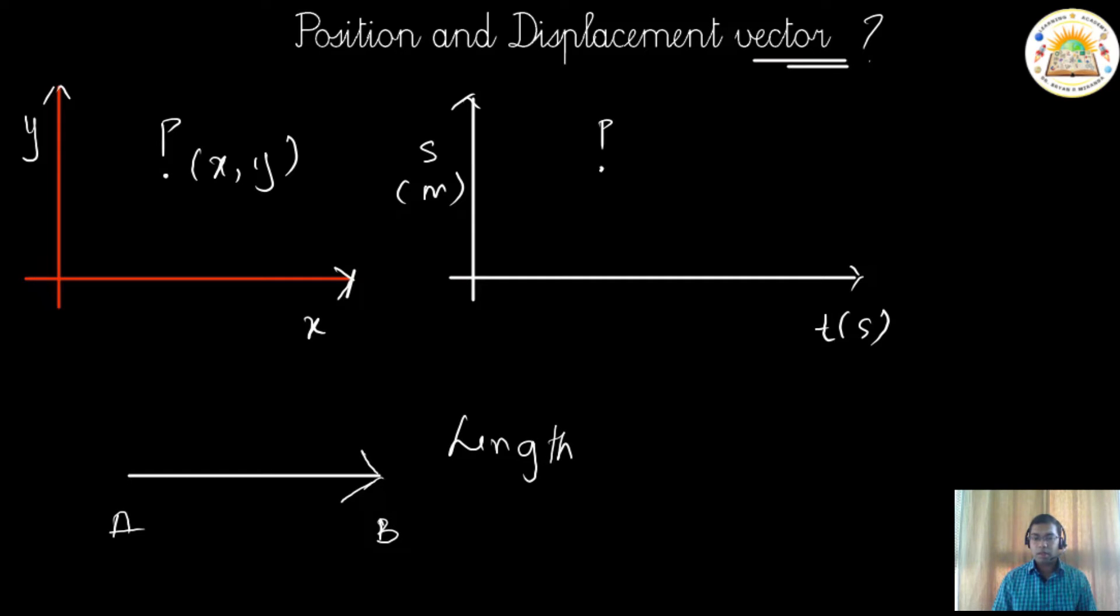If I take AB, the length that is there of AB will be the magnitude. This makes it scalar. The moment you add a direction to it, it becomes a vector. In order to estimate the position of this particular particle or position of this particular point P, from the origin, we can draw a straight line with the arrow pointing towards P. This would give us the position vector or the displacement vector.